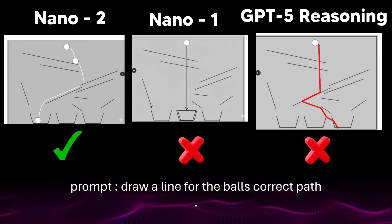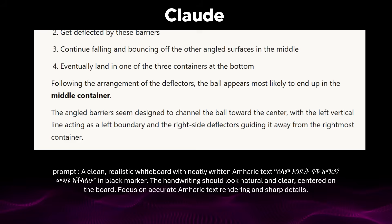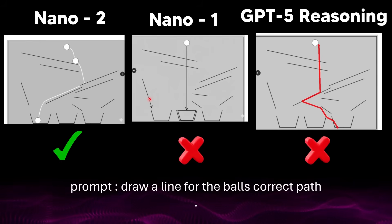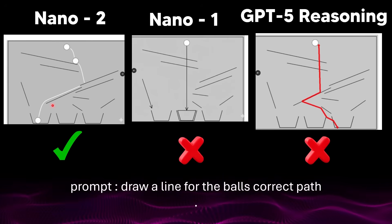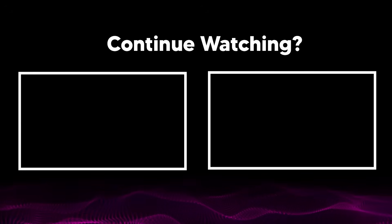To draw the correct line, the model has to simulate how the ball interacts with each slope, predict redirection angles, and mentally run the trajectory forward — very close to how humans visualize real-world motion, a step toward embodied reasoning in AI. Many benchmarks test text-based logic, but this tests visual and physical reasoning, something humans do instinctively but AI often struggles with. Claude predicted the ball would end up in the middle container, when it clearly ends up in the left. For me, Nano Banana 2 is a remarkable step, and I wouldn't be surprised if Google announces a huge robotics breakthrough — it just has these world models built in.